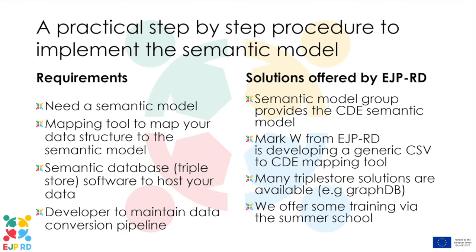Third, once you have a semantic model, you need to host that data somewhere — we usually use a triple store to host semantic model databases. There are many triple store solutions available; some are free and some are commercialized, but you can get a free version and later move to a commercial one. For example, GraphDB is really good — it has an authentication layer so you can lock your data and provide it only to authorized persons. Fourth, you need to maintain a data conversion pipeline. From the EJP-RD side, we provide basic training — as Claudio mentioned, at the summer school we offer basics of semantic technology and tools to generate the semantic output.